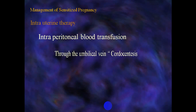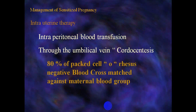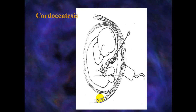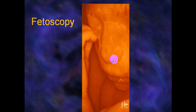Intrauterine therapy involves intraperitoneal blood transfusion or transfusion through the umbilical vein via cordocentesis using 80% packed RBCs of O RH-negative blood cross-matched against the maternal blood group, free of infection and fresh. This is the criteria for blood to be transfused intrauterine. The procedure is performed by cordocentesis from the umbilical cord. Either exchange blood transfusion is done or sampling is taken for hemoglobin and bilirubin levels. The last picture shows a fetoscope used for cordocentesis and intrauterine blood transfusion.